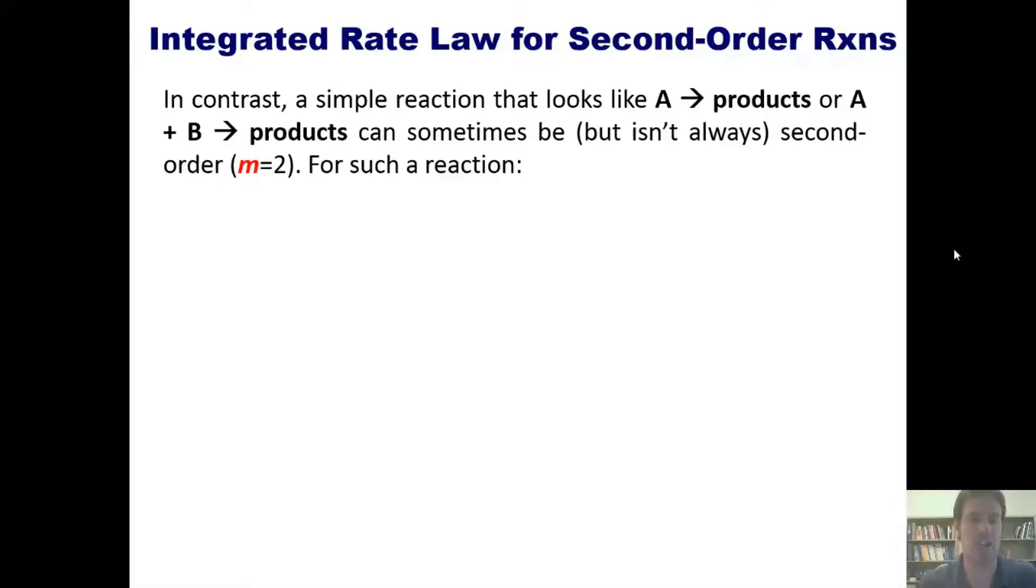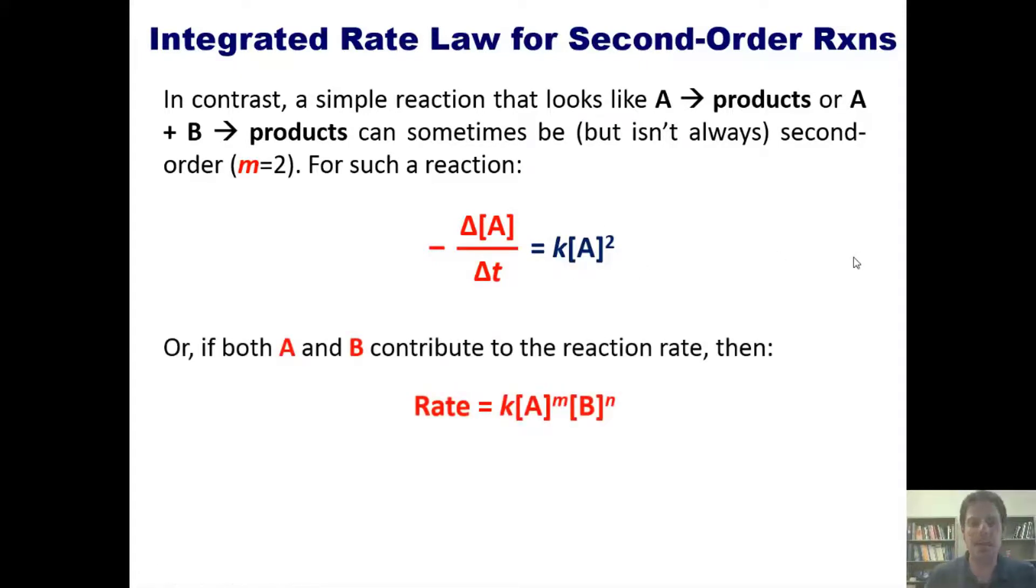For such a reaction, this equation holds true, which once again blends an element from the relative reaction rate law equation with the general rate law equation. Or in contrast, if both A and B contribute to the reaction rate, as in this scenario where m and n are both one, it's second order overall, you can get something different.